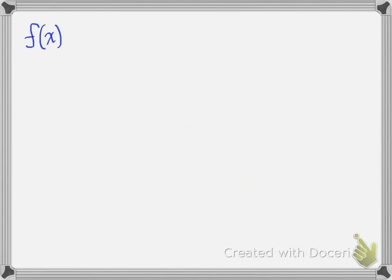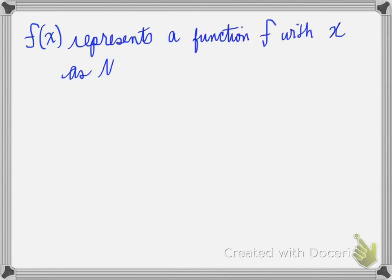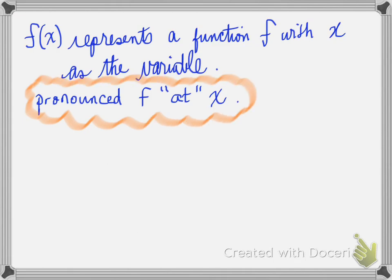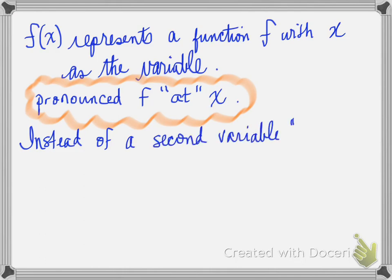Function notation f with a bracket x represents a function. So this is actually pronounced f at x. So it's a function f with x as the variable. We pronounce this as f at x. So f is a function with x as the variable.